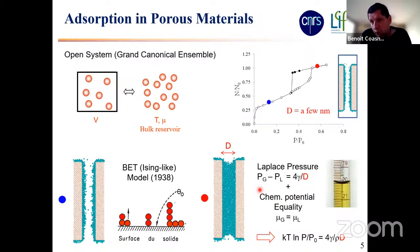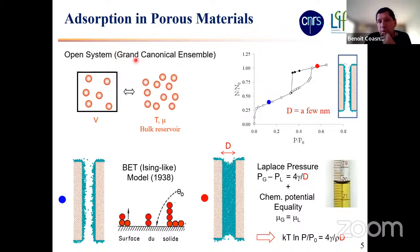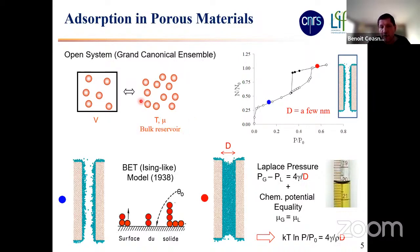Let me start with the first part on the thermodynamics of fluids in nanopores. I'm going to start with a very established picture. When you work with porous materials and gas adsorption, the natural thermodynamic ensemble to consider is the open system, which we call in statistical mechanics the grand canonical ensemble. In this ensemble, you have a system with a constant volume — the porous material with the adsorbed phase — and it is in equilibrium with an infinite reservoir of bulk molecules that imposes the temperature and the chemical potential.